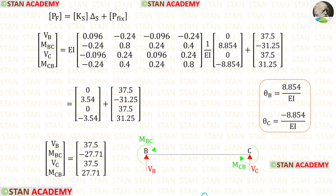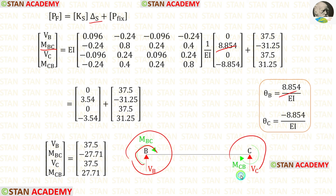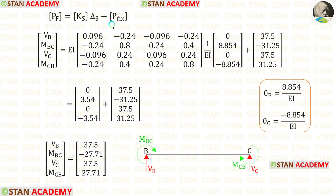Now let us find the final moments and reactions in beam BC. We apply the element stiffness matrix for BC. In the displacement matrix, point B has moment MBC so we apply theta B, and point C has moment MCB so we apply theta C; all other values are 0. Adding the fixed end moments and reactions, after calculation we get the reactions and moments for beam BC. For MBC, we get a negative value, meaning it is acting in the anti-clockwise direction.